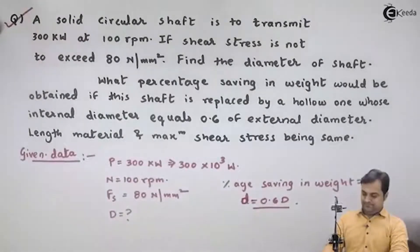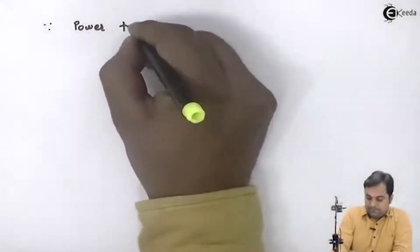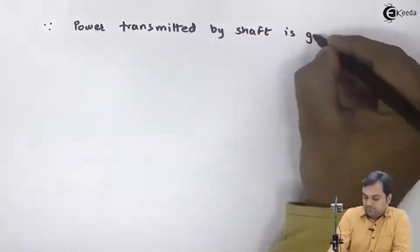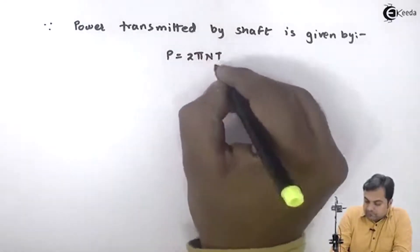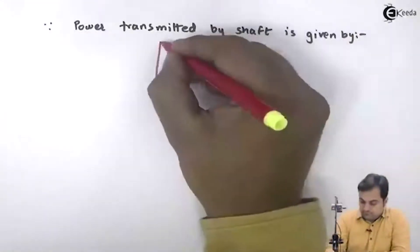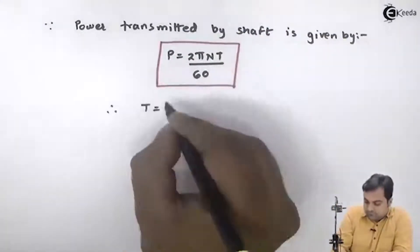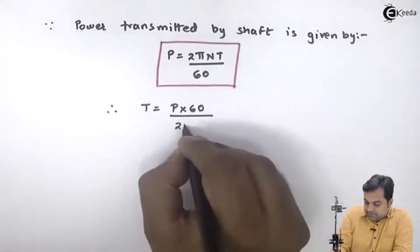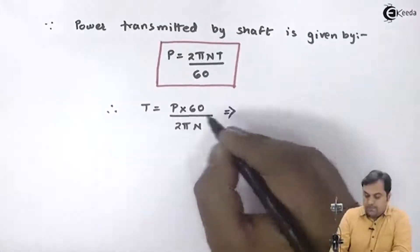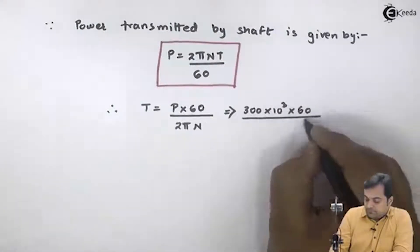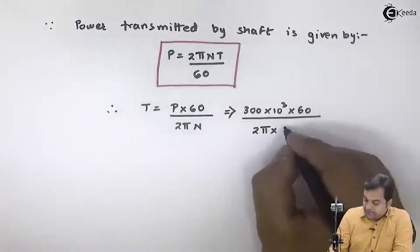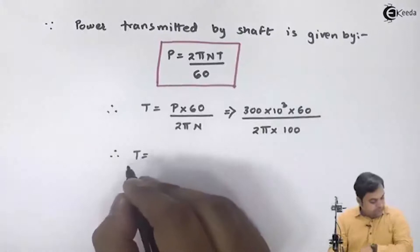Since power and rpm are given, I will start with the equation of power. Power transmitted by a shaft is given by P = 2πNT/60. Therefore, T = P×60 / (2πN). Power is 300×10³ watts and speed is 100 rpm.